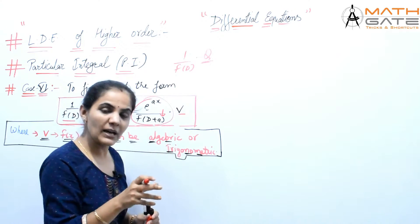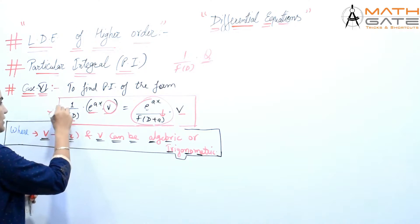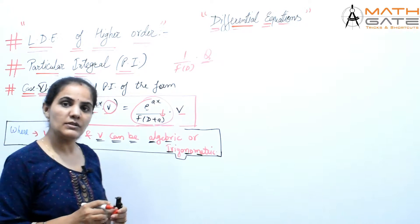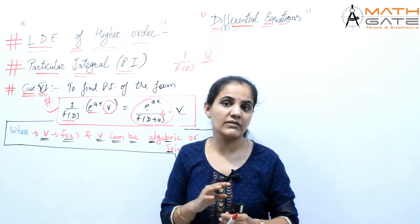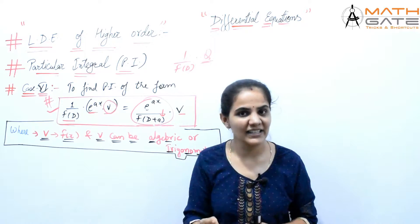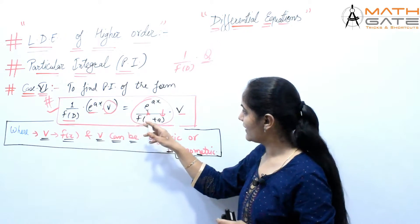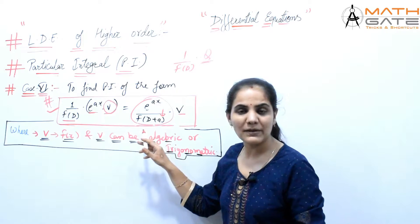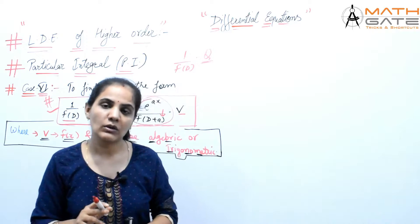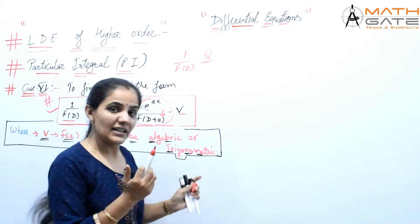This is the basic formula — this is a special type. In Case 6 and Case 7, both discuss two functions applied at a time. So 1 by F(D) into e to the power ax into V becomes e to the power ax by F of D plus A into V. Here V is the function of x and V can be trigonometric or algebraic. Let's see how to apply this form.